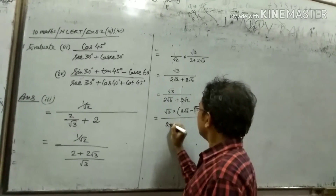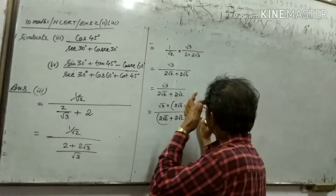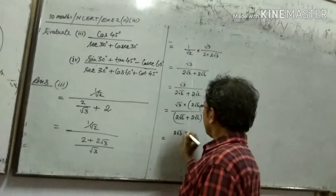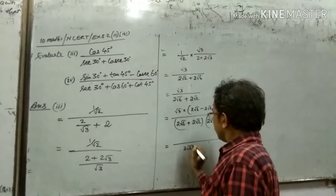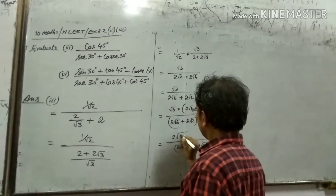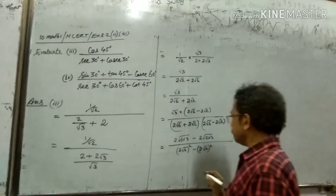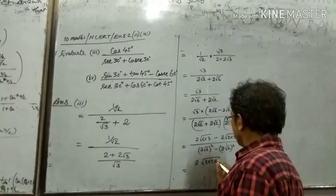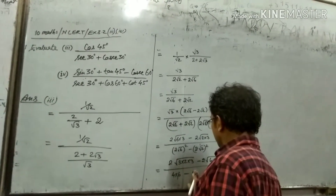Minus 2. 2 under root 6 plus 2 root 2 into 2 under root 6 minus 2 root 2. 2 root 3 into 2 under root 6 into 3, minus 2 under root 2 into 3, minus 2 into 3. 2, 3 into 2 into 3 minus 2 under root 6. 4 into 6 minus 4 into 2.